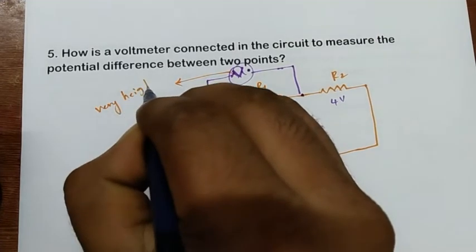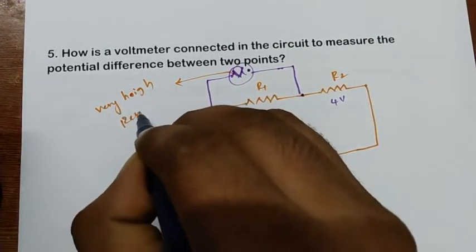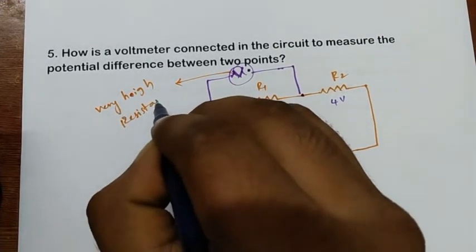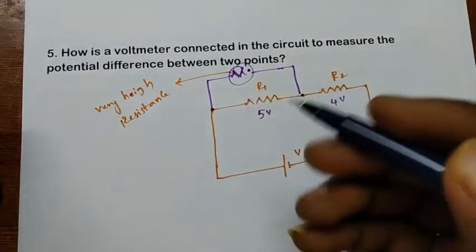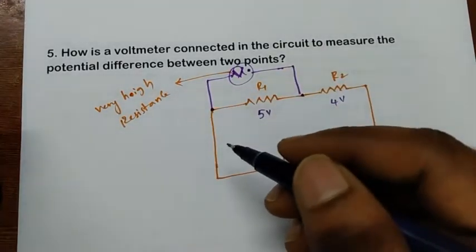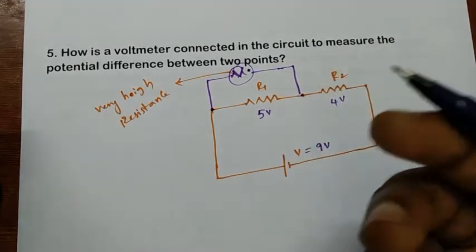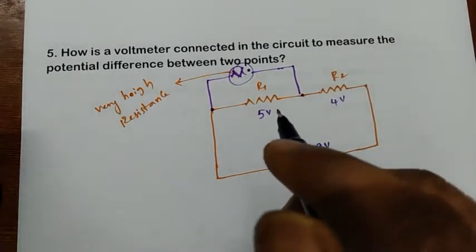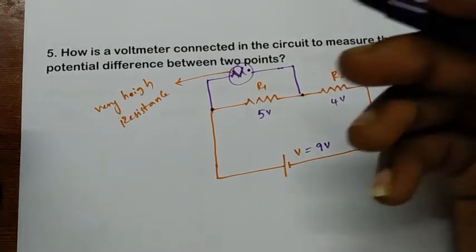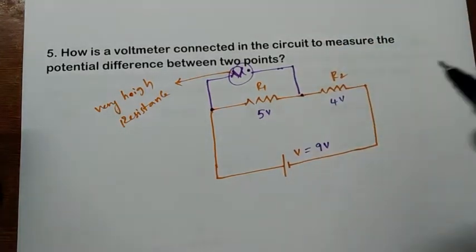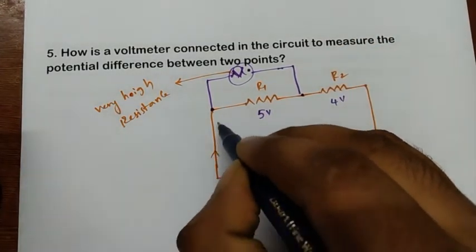The voltmeter offers very high resistance — almost infinity. For an ideal voltmeter, the resistance is infinity. So what will happen if the resistance is very high? Whatever current is coming to this node will be affected accordingly.